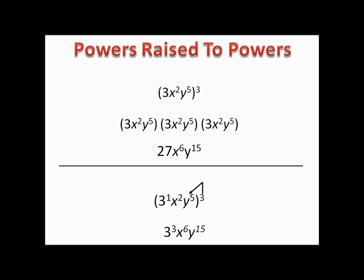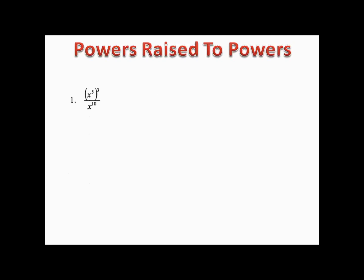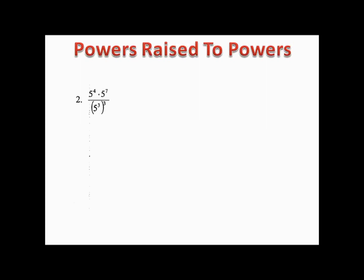Example one: (x⁵)³ over x¹⁰. That's x⁵ times x⁵ times x⁵. Using our new trick, we distribute the 3 and get x¹⁵ over x¹⁰. Now we apply our rule for division — subtract exponents: 15 minus 10 — and we end up with x to the fifth.